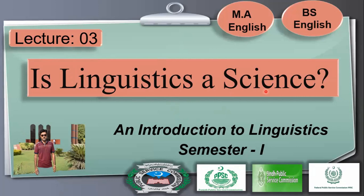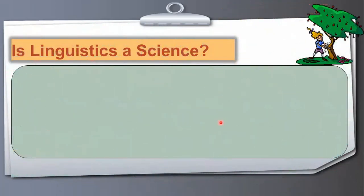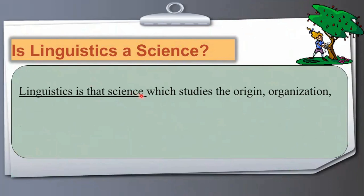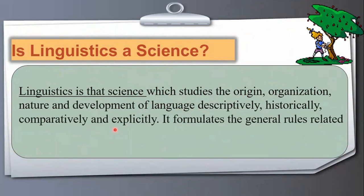So let's start our today's topic. Here it is: Is linguistics a science? Linguistics is that science which studies the origin, organization, nature and development of language descriptively, historically, comparatively and explicitly. It formulates the general rules related to language.